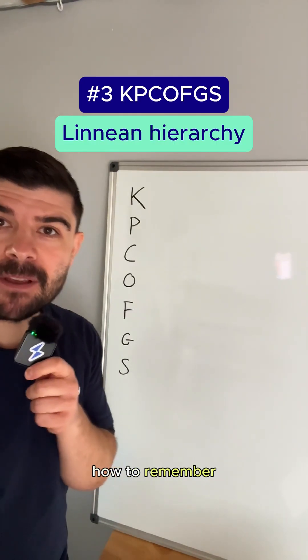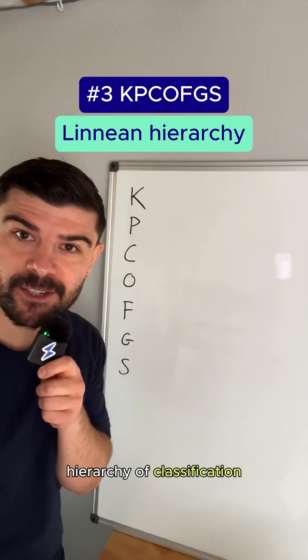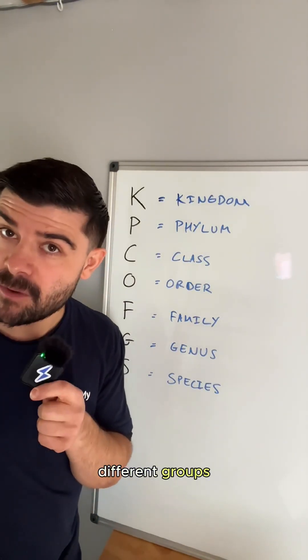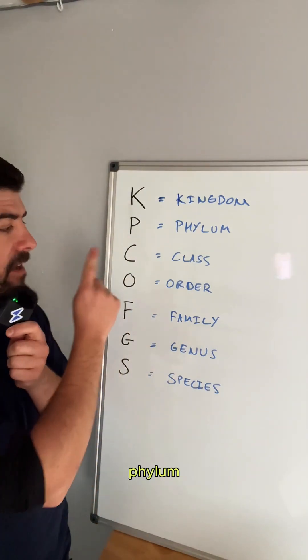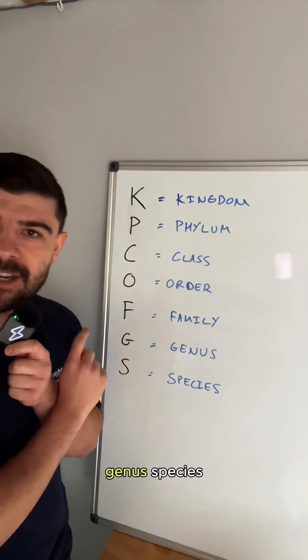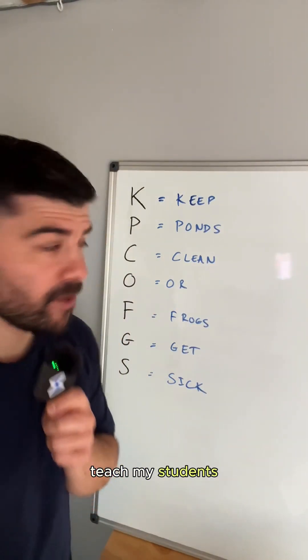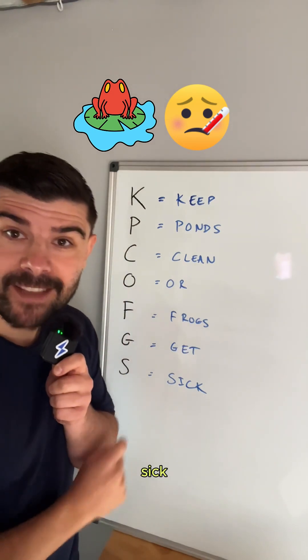Memory hack three: how to remember the Linnaean hierarchy of classification. All organisms can be divided into different groups. Starting with the biggest we have kingdom, phylum, class, order, family, genus, species. I used to teach my students: keep ponds clean or frogs get sick.